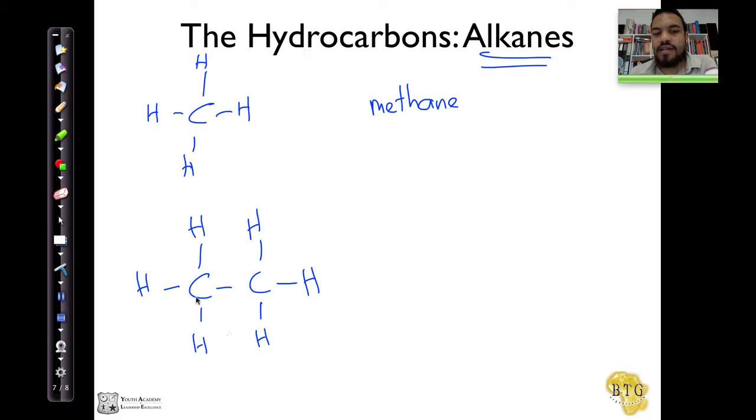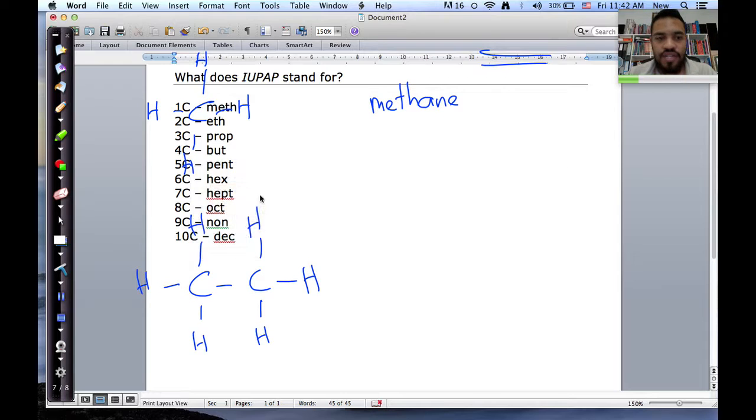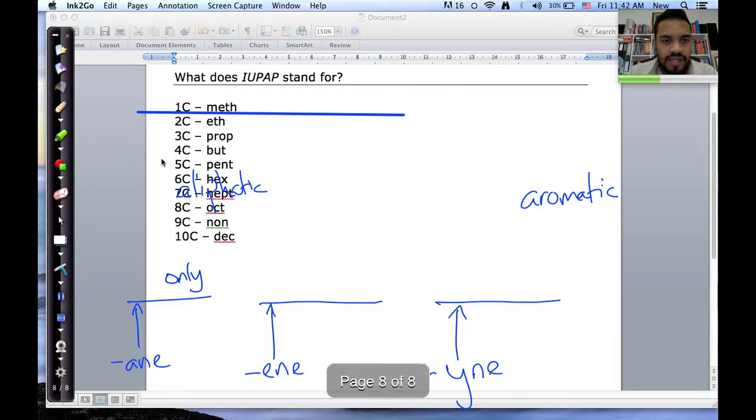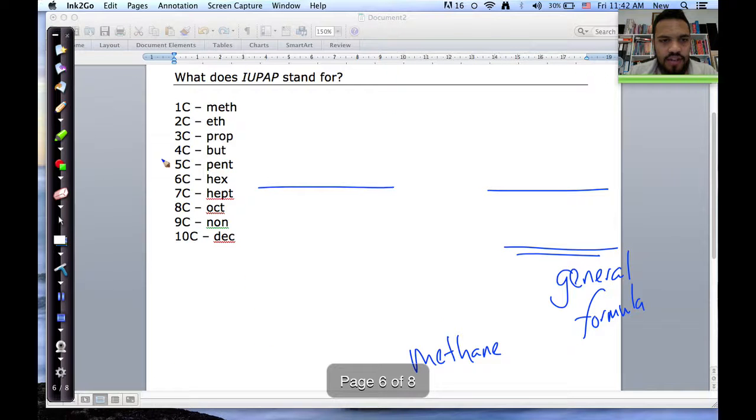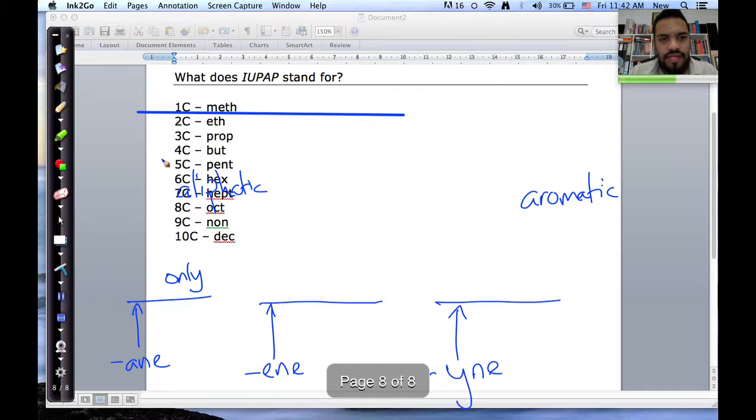Okay, so how many carbons in the longest chain here? Two carbons, very good. And what do we call two carbon atoms? Now, go to your summary sheet, look back at your summary sheet. Well, if we look over there, we can see on the summary sheet, we've got eth, right? We've got eth.